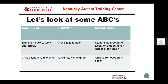The first thing we have to do when a student has a behavioral challenge is look at the ABCs: Antecedent — what happens right before the behavior occurs; Behavior — which should be specific; and Consequence — what happens when the student reacts that way.